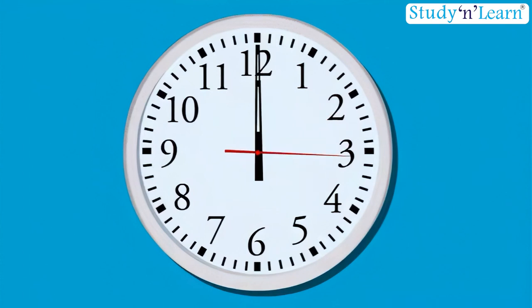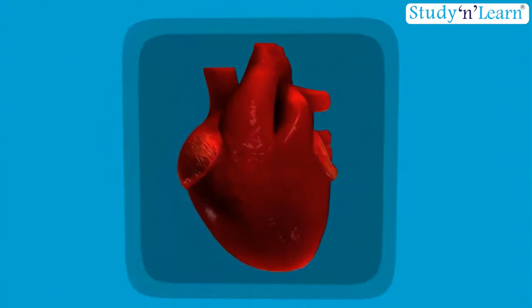Motion of the hands of a clock is also a periodic motion as it repeats itself after a fixed interval of time. The heartbeats in our body also represent a periodic motion as they repeat themselves after a fixed interval of time.